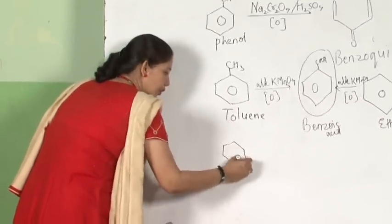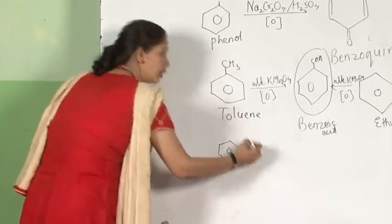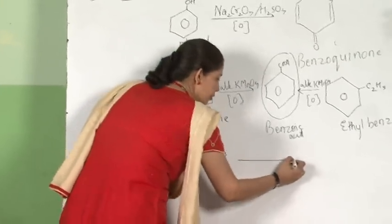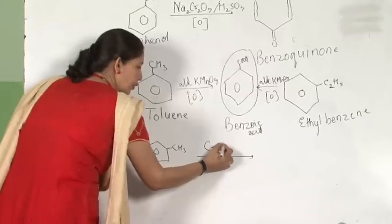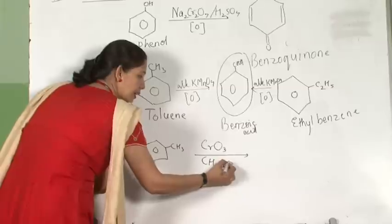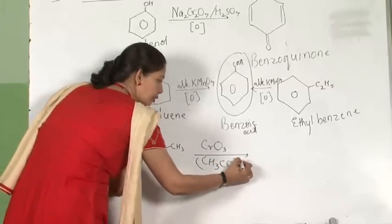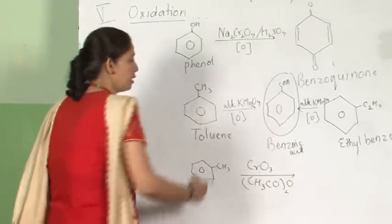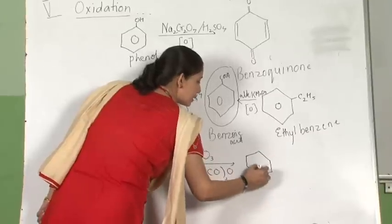Now one more reaction. If I take toluene once again, this is undergoing reaction with chromic oxide in presence of acetic anhydride — I told this last class. I am going to get a compound called benzaldehyde.